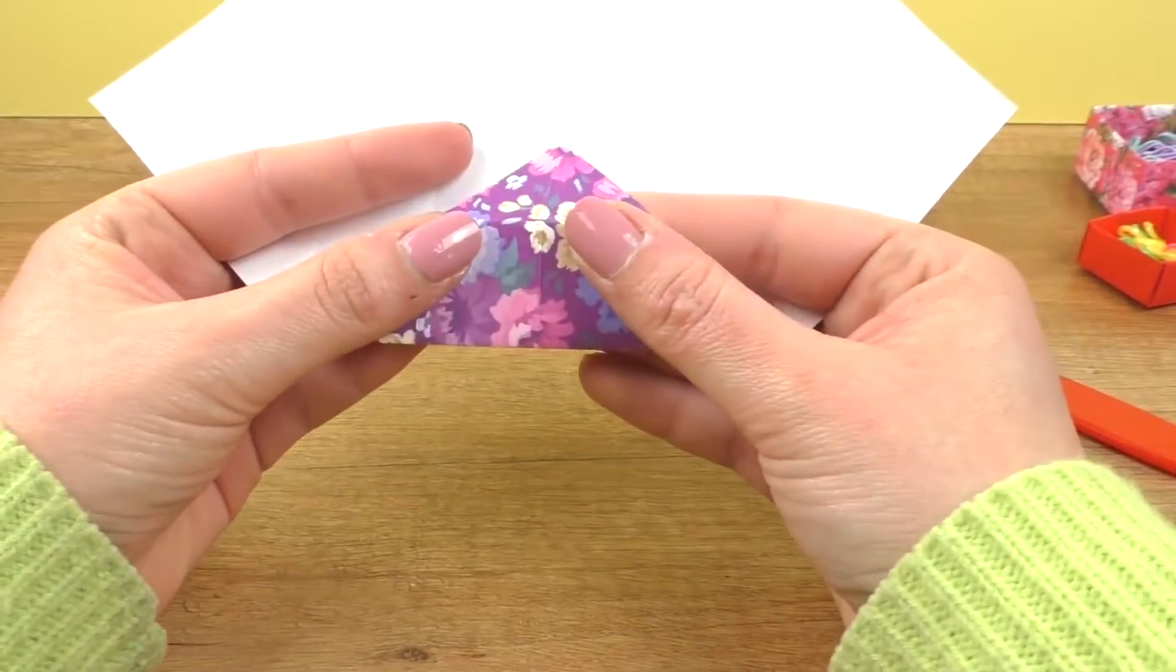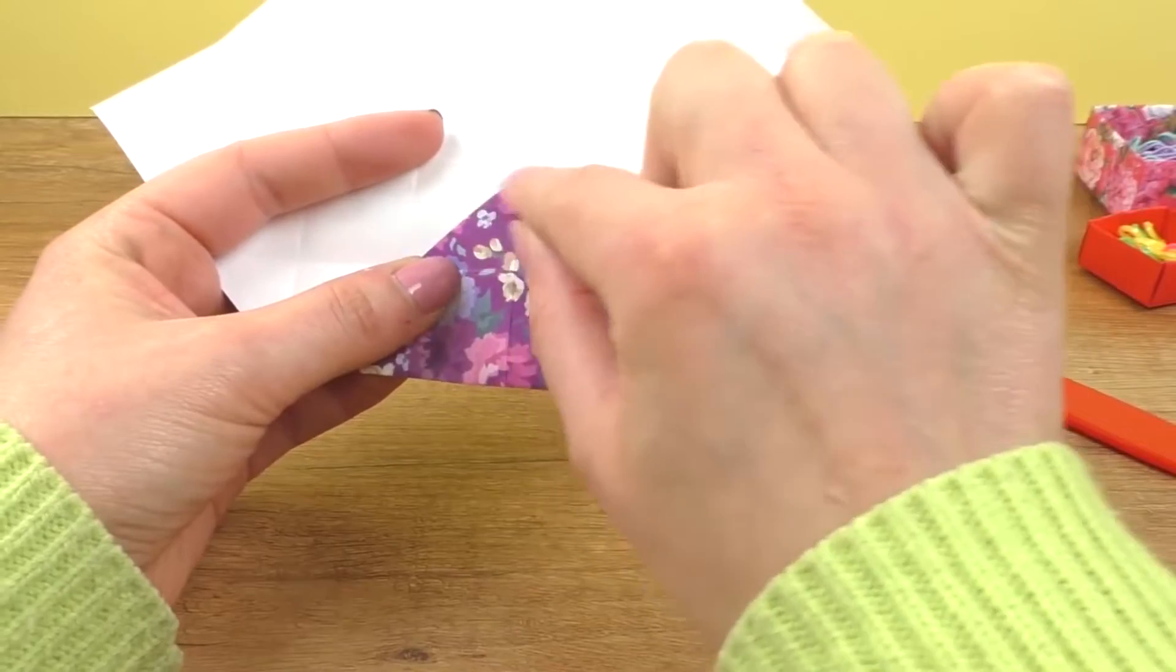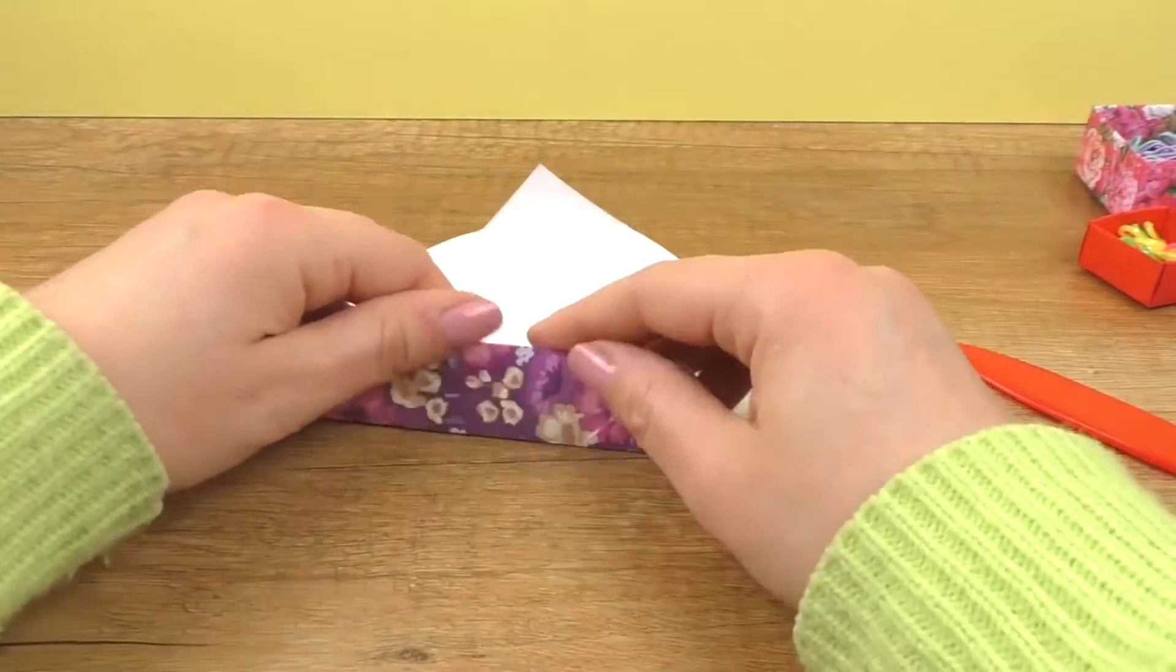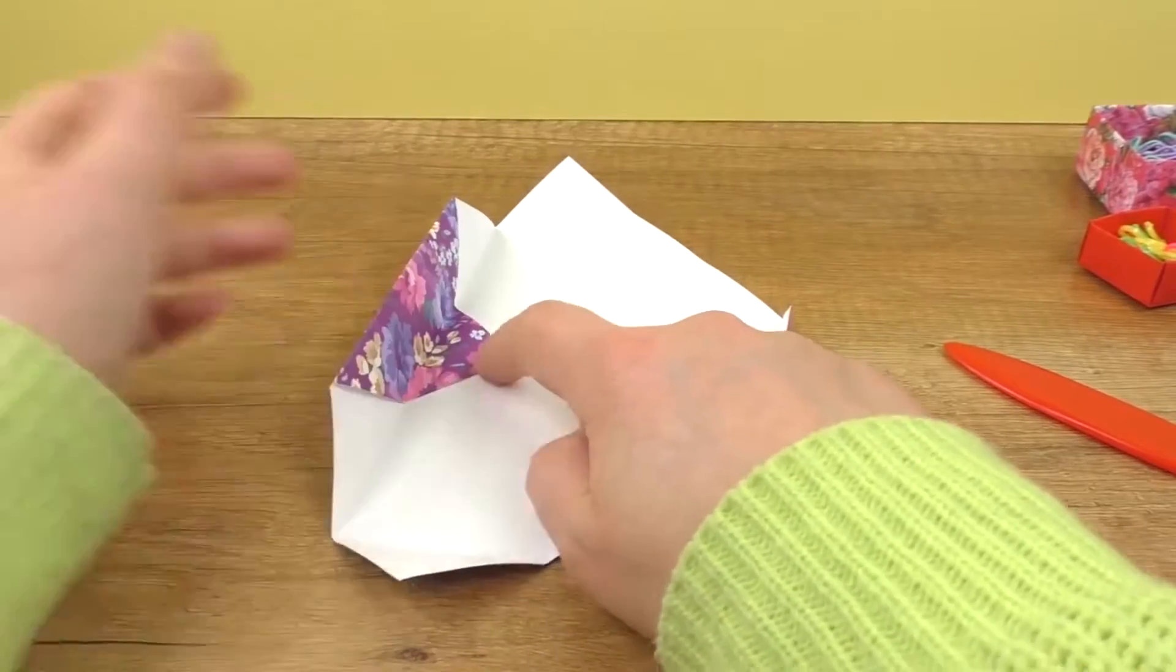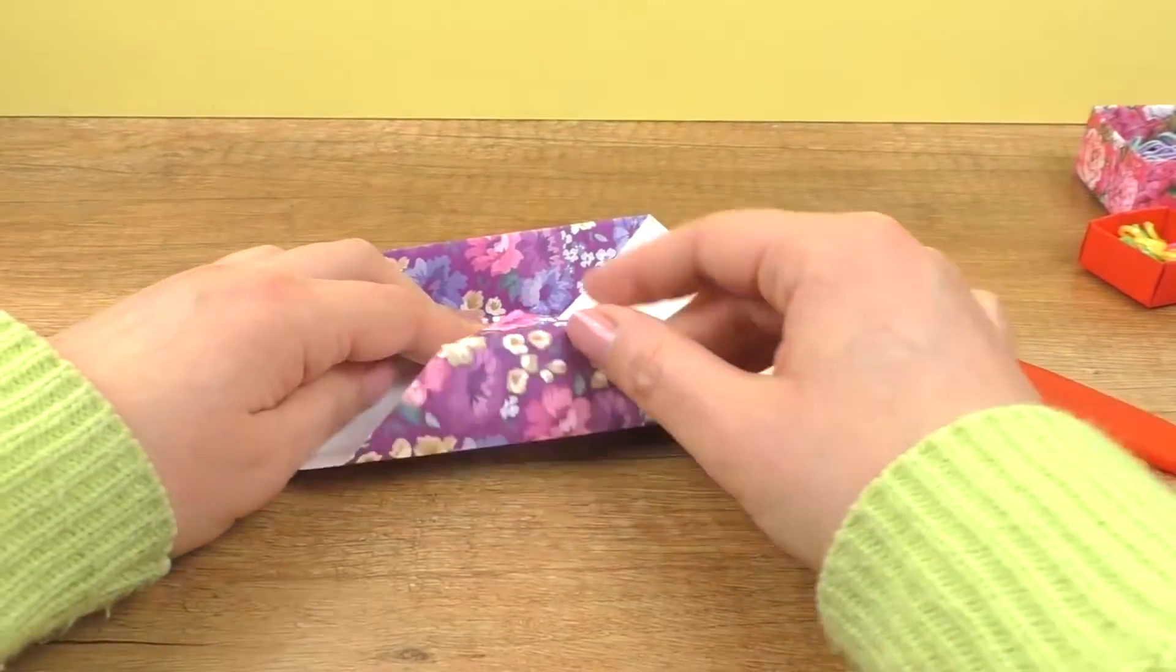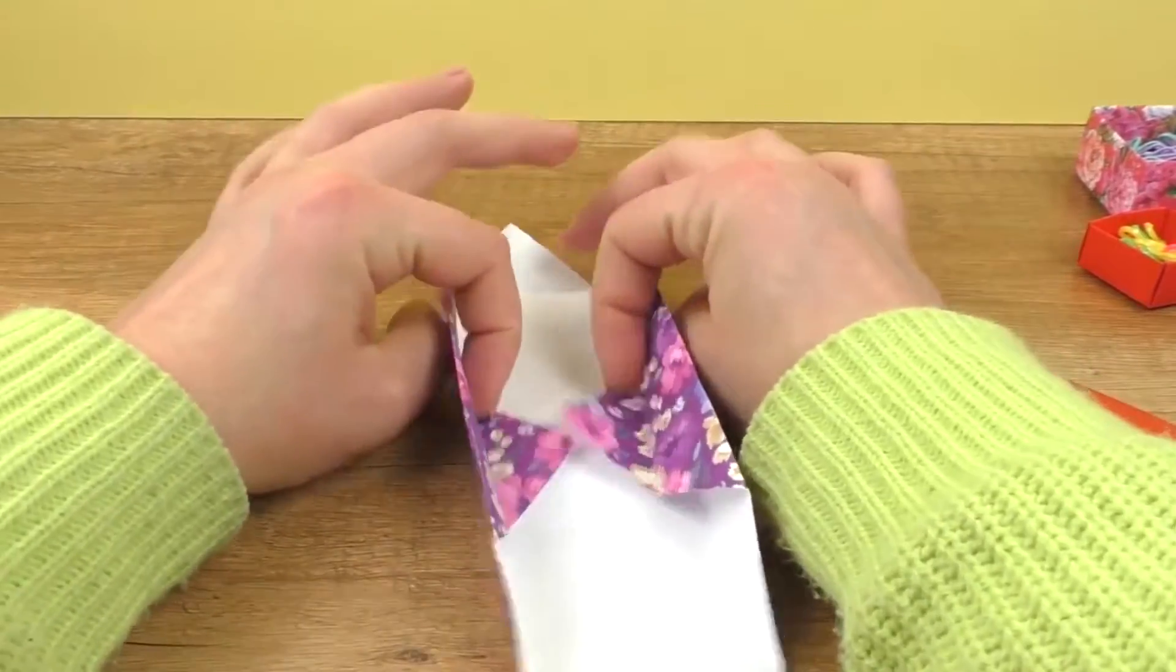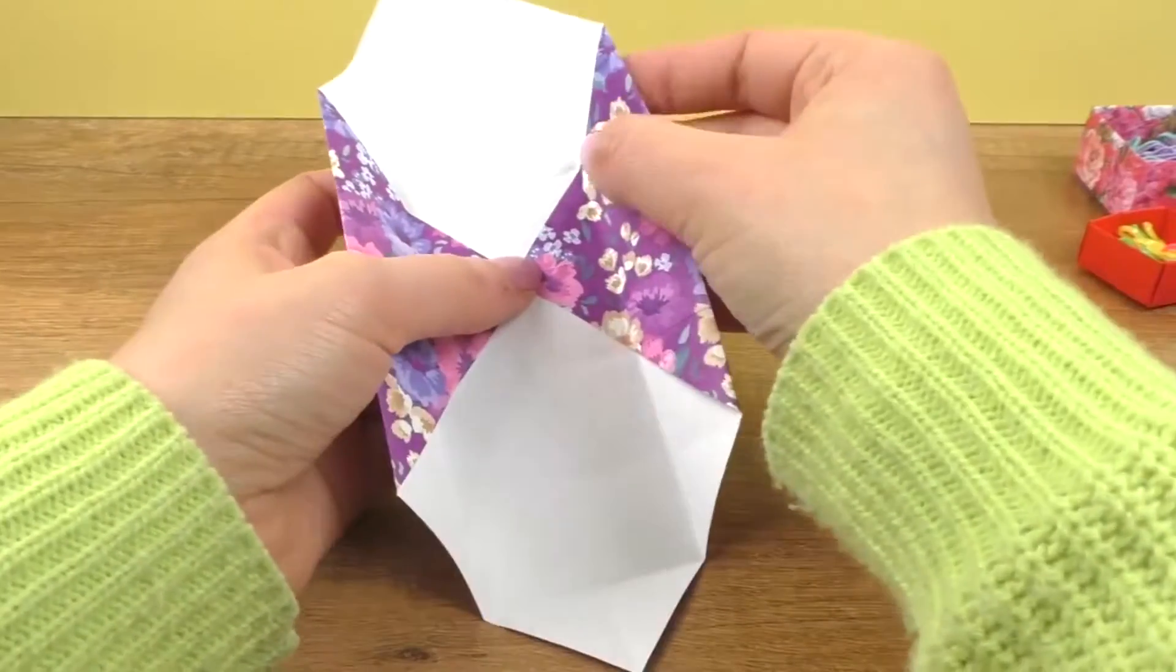And now I'm going to fold this corner so that the point goes to the middle line. And then I'm going to fold the side over like this. To the middle line again. So then I have one side already. So again, fold to the middle. And then fold over it. And so I have two sides in my box. Then I have to do the other sides as well.